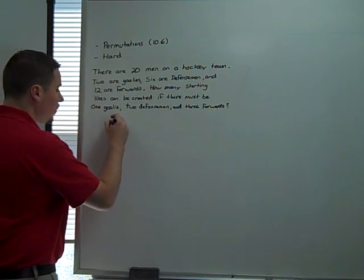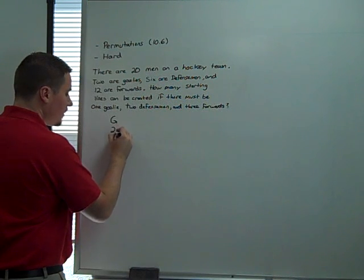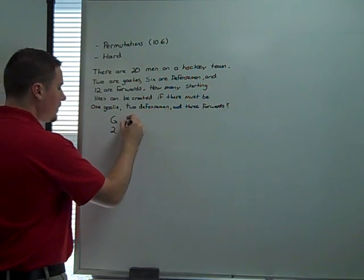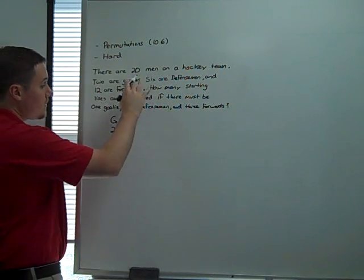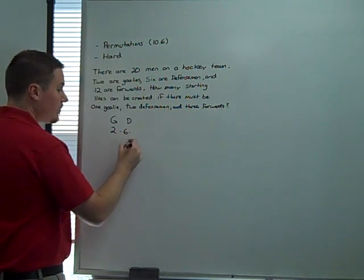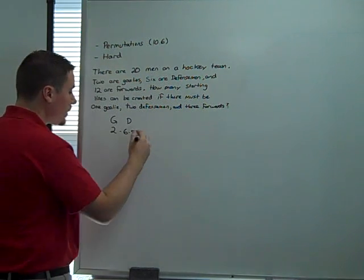Well, our choice for goalie is going to be relatively straightforward. We only have two choices, and that's it. Then, we have to choose defensemen. For the first defenseman, we have six choices. For the second defenseman, we have five choices because we already chose one of them.